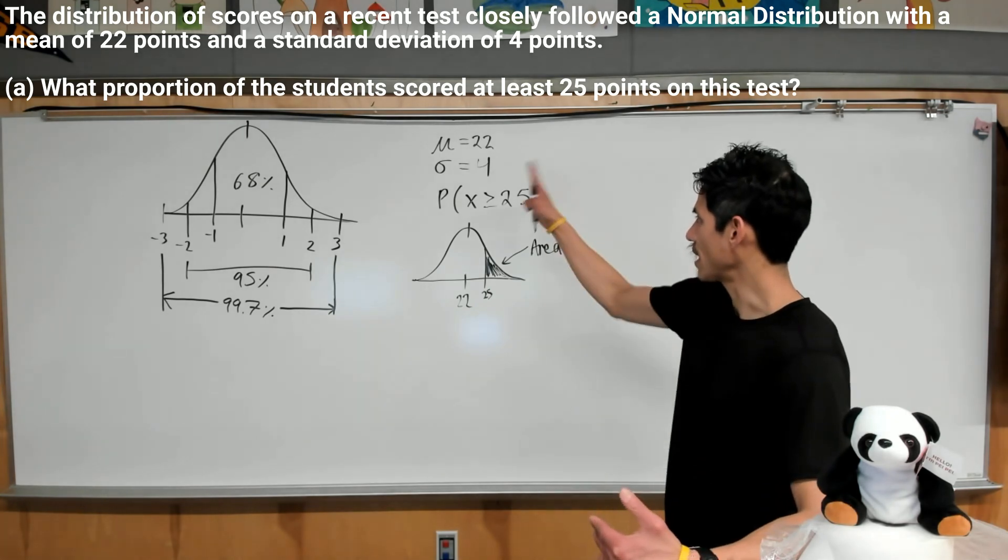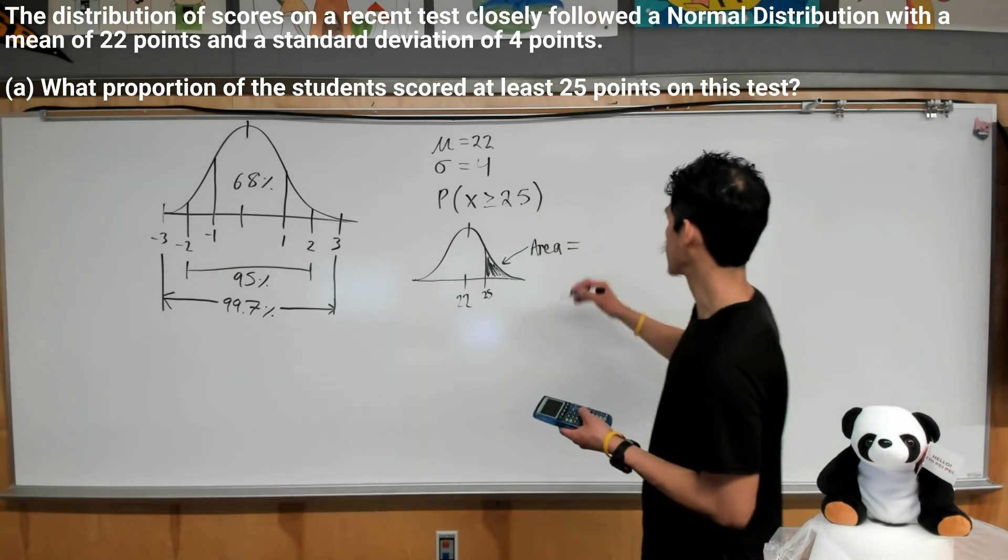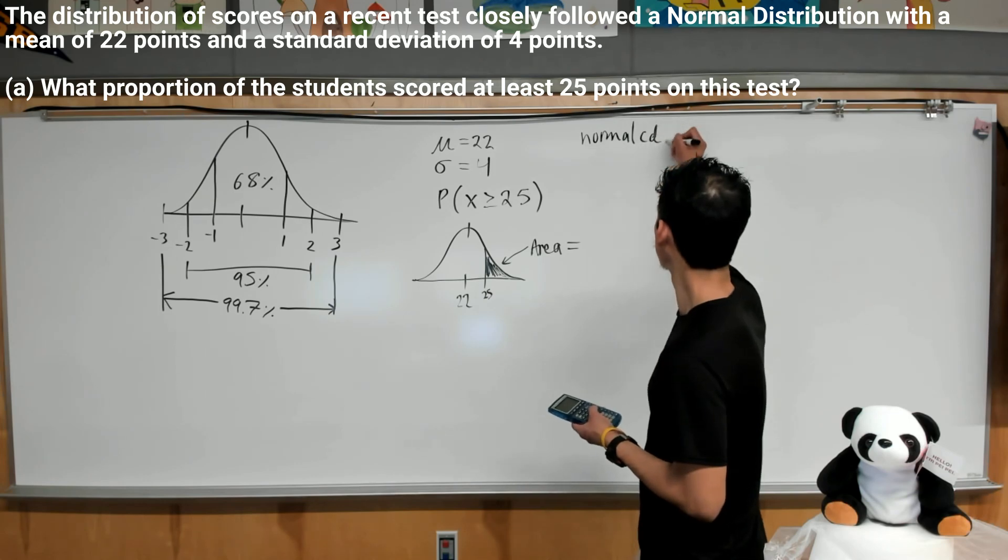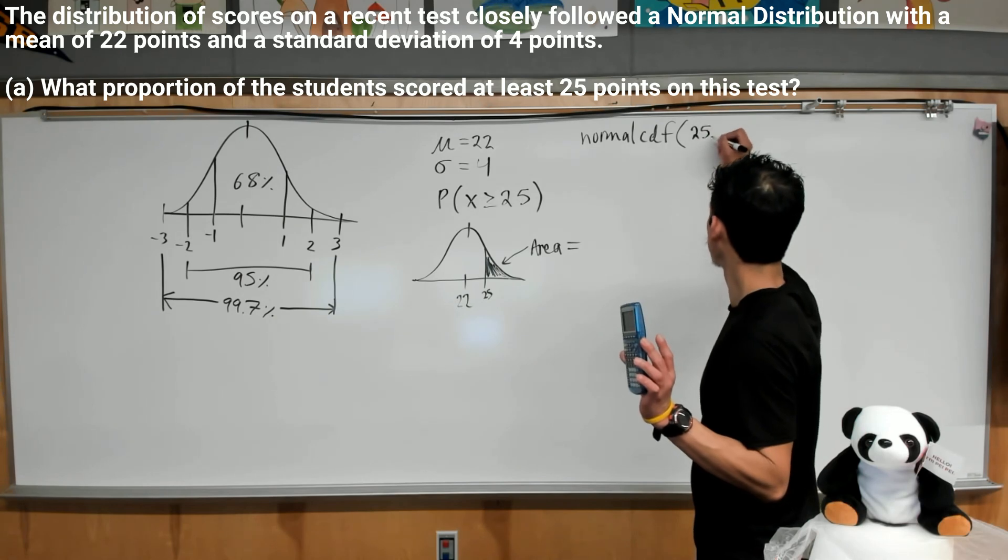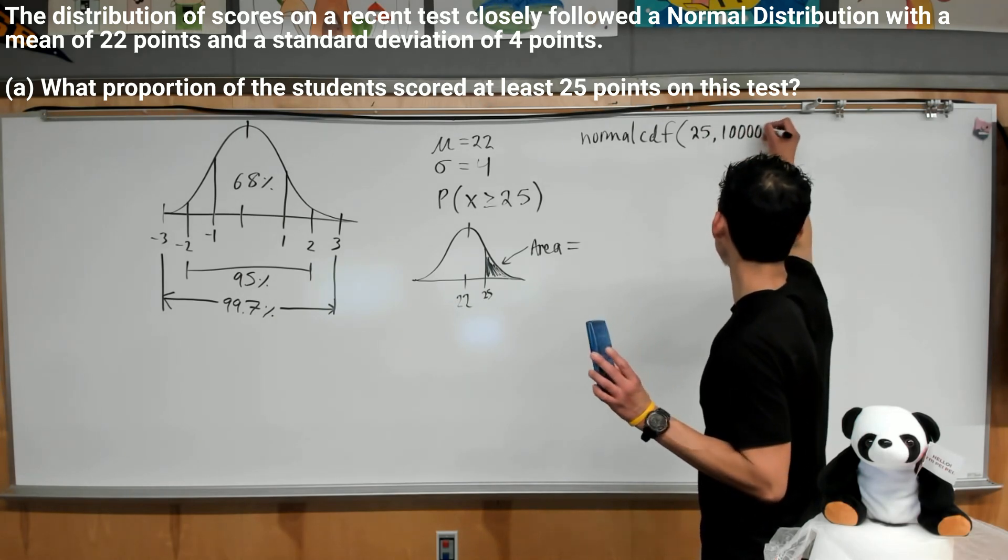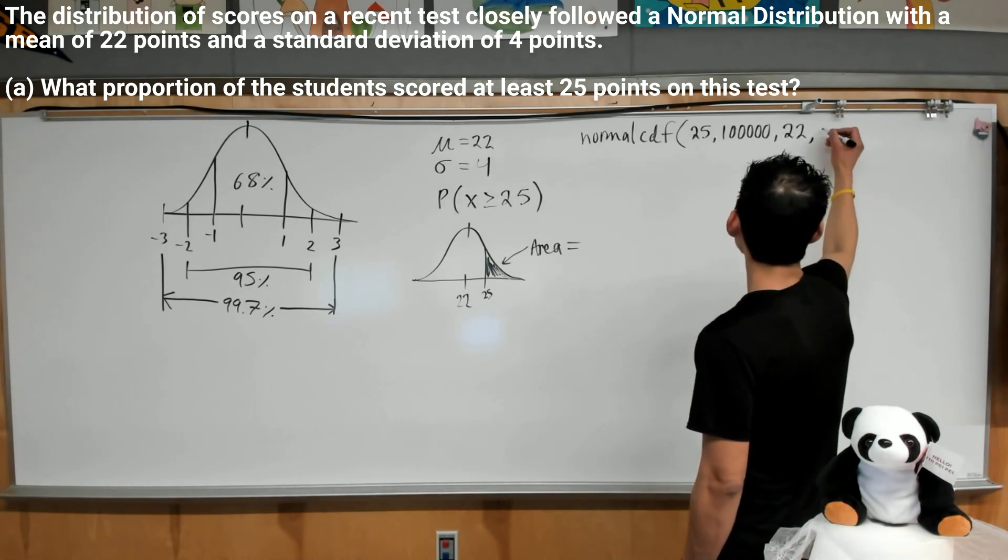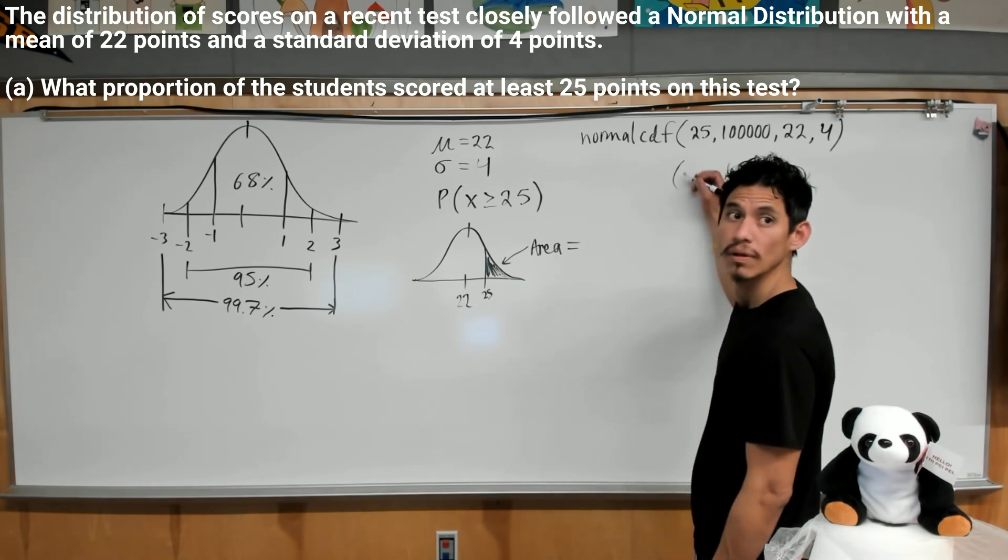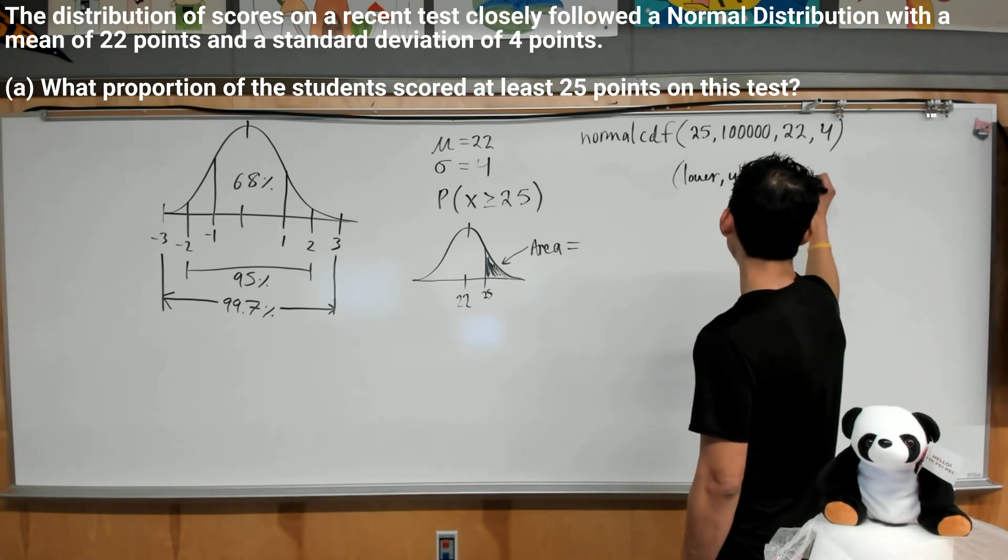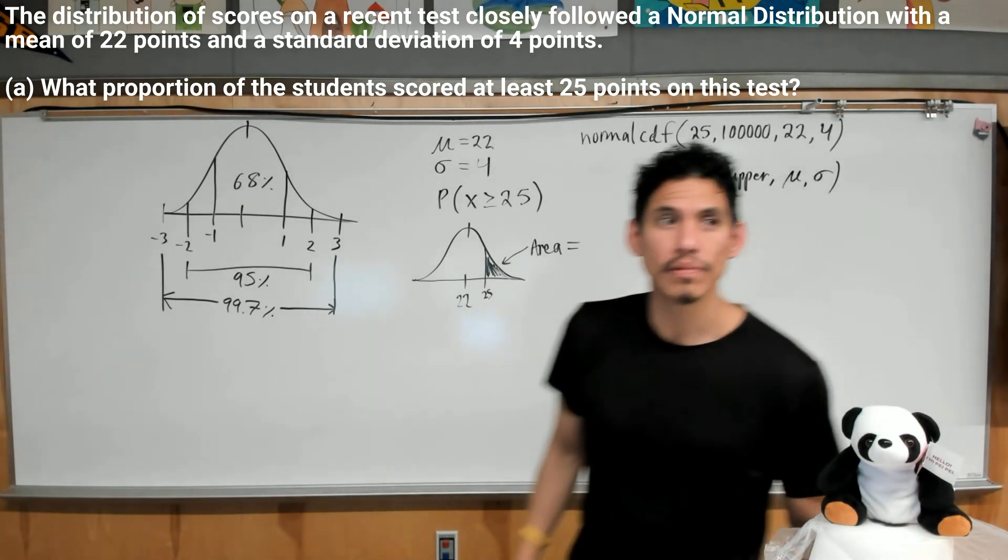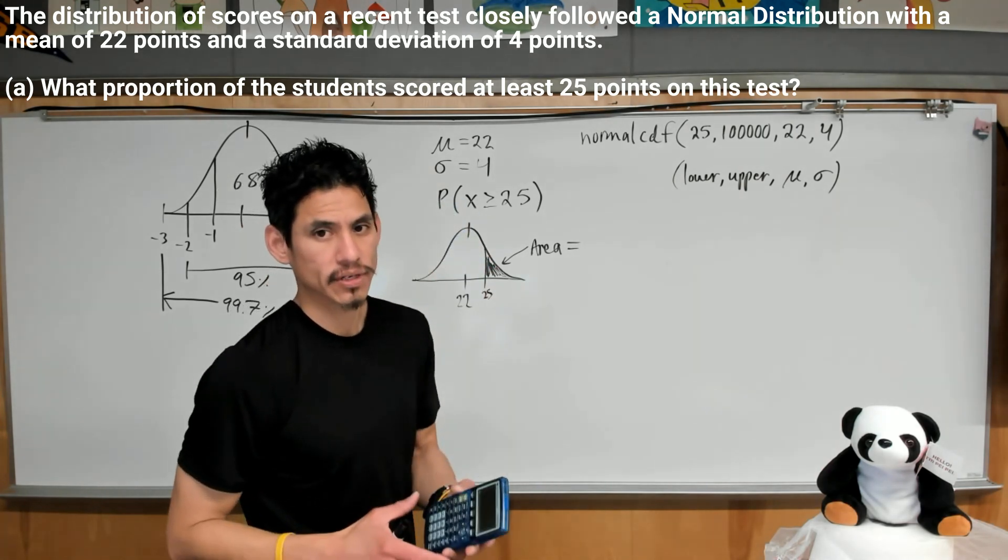So we can standardize this or we can use our calculator because it's faster and it's quicker and it's cooler. So let's remember the syntax. We can go to normal CDF. And then old school calculators, you got to memorize the whole thing. So lower bound is going to be 25, then you got to press comma. Upper bound is enter like a billion, enter a very big number, followed by the mean and standard deviation. So followed by 22, 4. So this is the lower, upper, mean, standard deviation. Again, if you have a newer calculator, it just has that type into the calculator so you can easily know what to write.